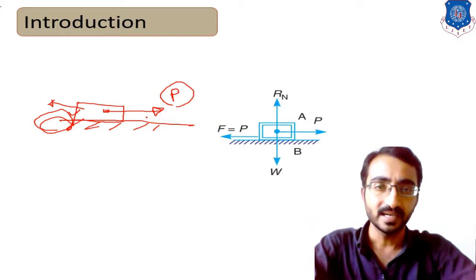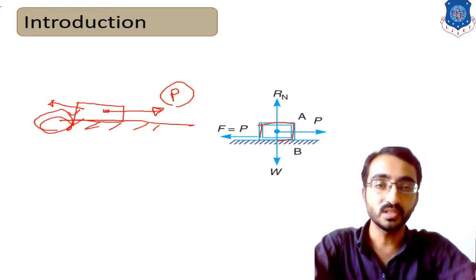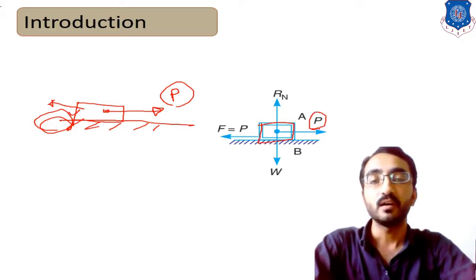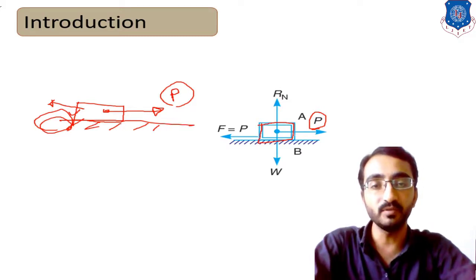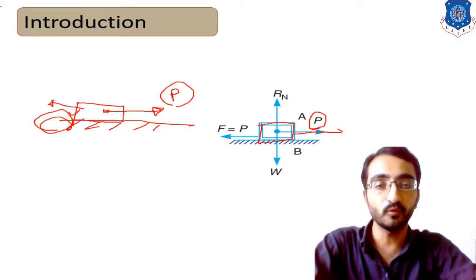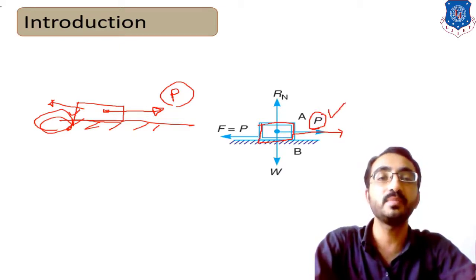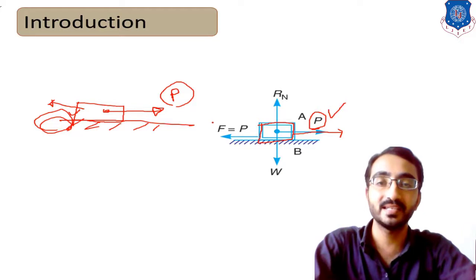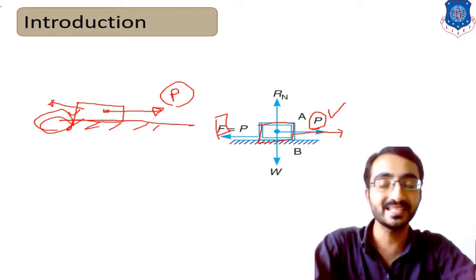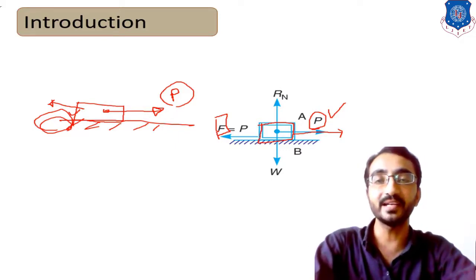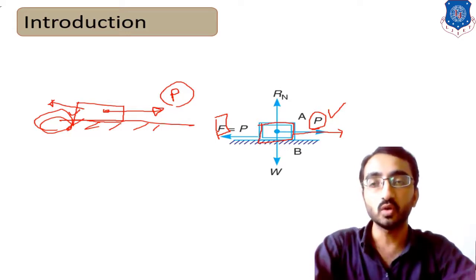Consider body A subjected to an external force P. Due to this force, the body will try to move from its first position to its second position. But due to this external force, there will be some resisting force in the opposite direction of motion. This resisting force is known as friction.